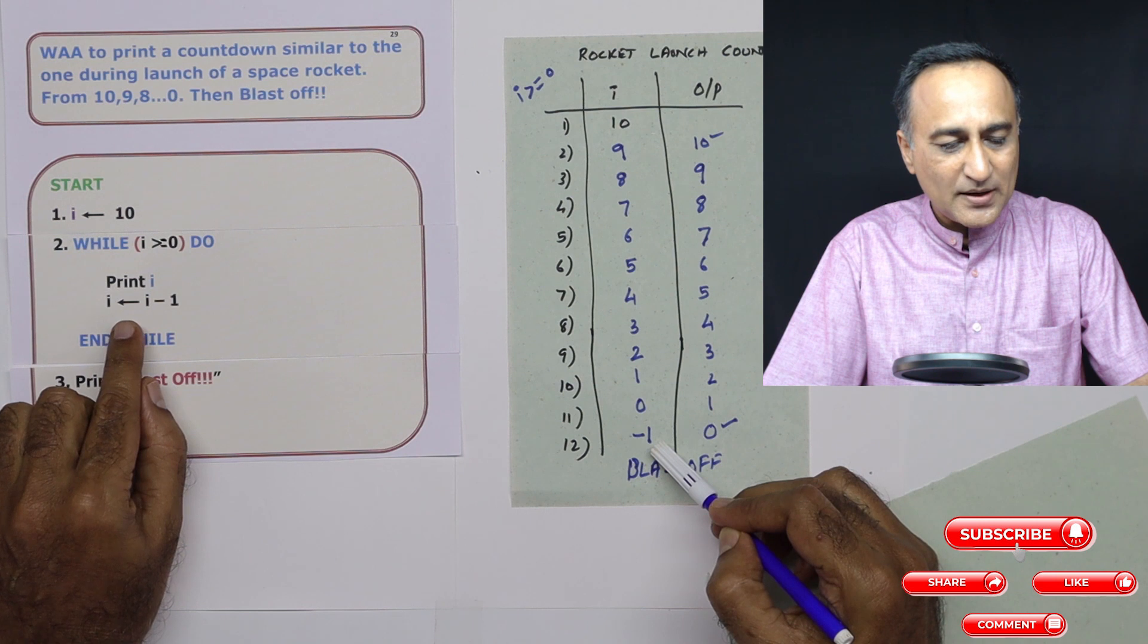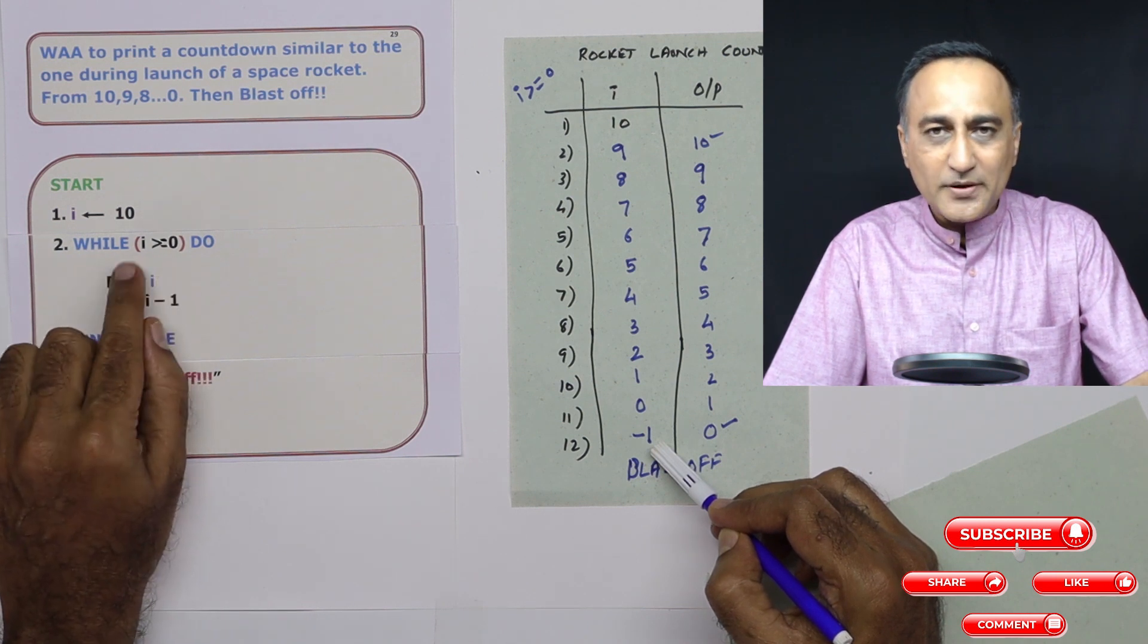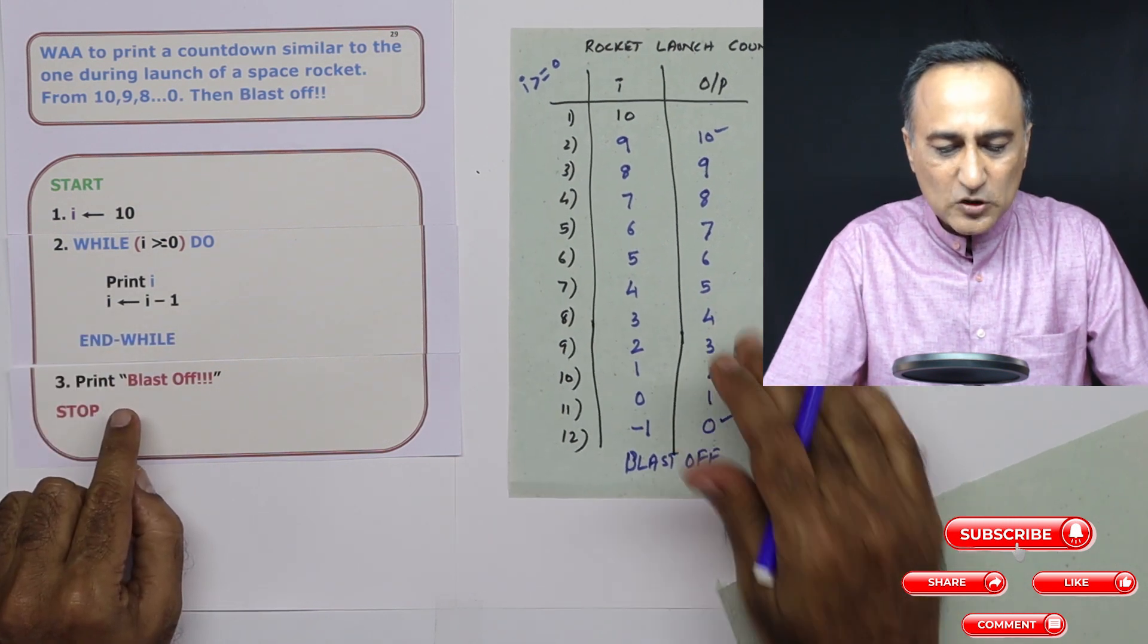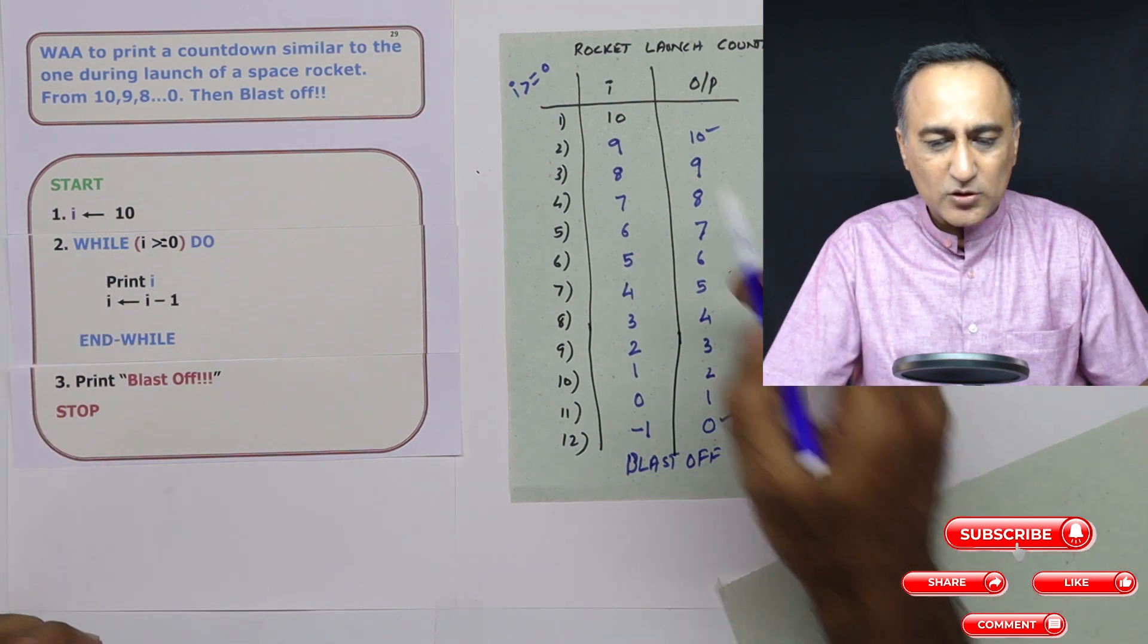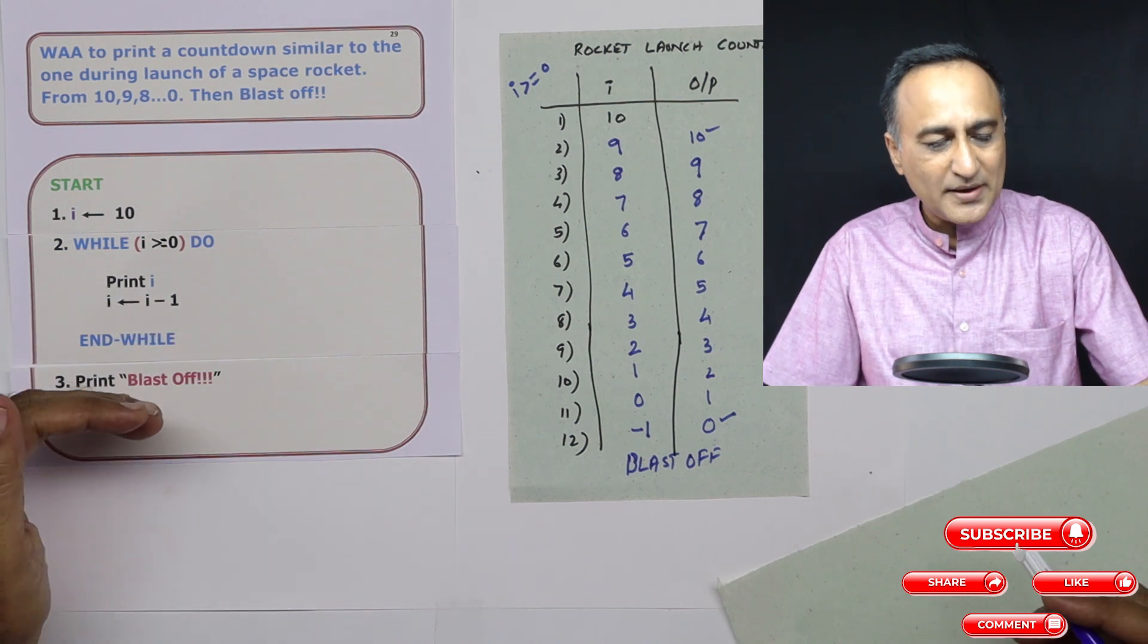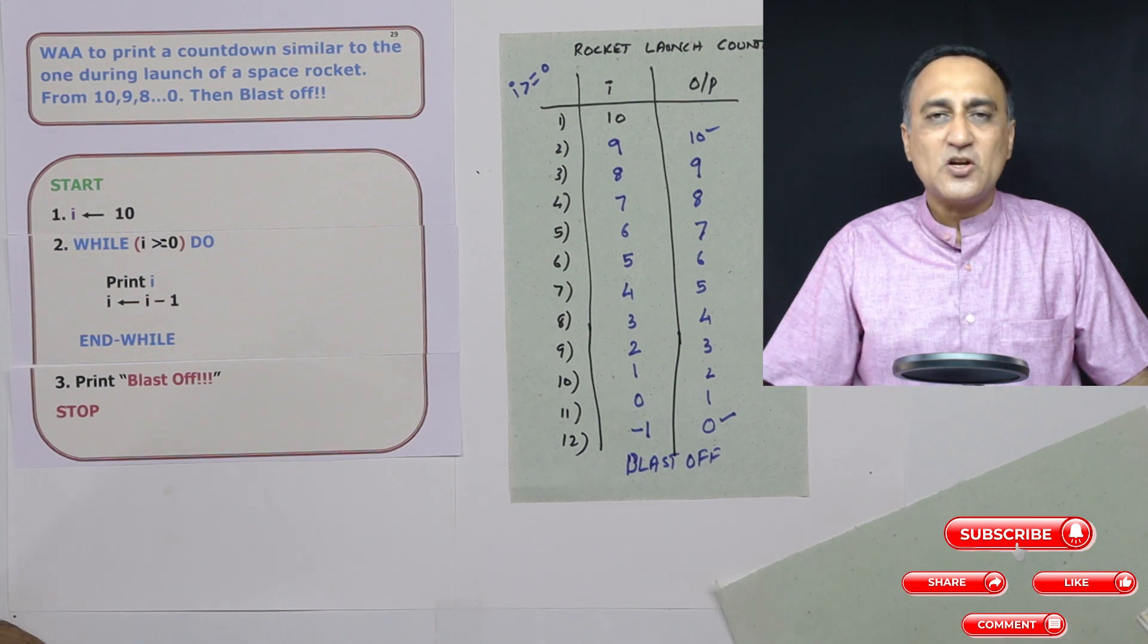Then I becomes minus one. Is minus one greater than or equal to zero? It is false. Then I'm going to come and print this message blast off on your screen. So this is the way how the rocket launch countdown is going to be printed starting from 10 all the way till zero. And after zero is printed, we are going to print the message blast off.